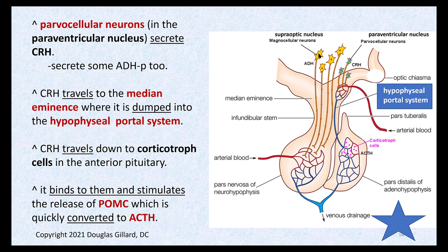Magnocellular neurons have very long axons — mainly from the supraoptic nuclei. Parvocellular neurons in the paraventricular nuclei have short stubby axons and dump into the hypothalamo-portal system. CRH is carried down via the microcirculation to feed all the corticotroph cells. Corticotroph cells release POMC, which is converted by PC1 into ACTH.